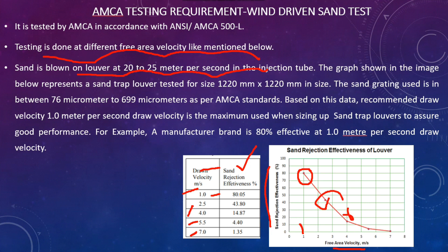Based on this data, the recommended draw velocity is 1 meter per second as the maximum used when sizing. That is because the manufacturer band shows 80% effectiveness at 1 m/s draw velocity. Different manufacturers have different sand rejection effectiveness. In the project specification, a minimum percentage of sand rejection effectiveness will be clearly mentioned, and based on that the product is selected. At 1 m/s draw velocity, it has the highest performance, which is the reason we always go with 1 m/s selection.